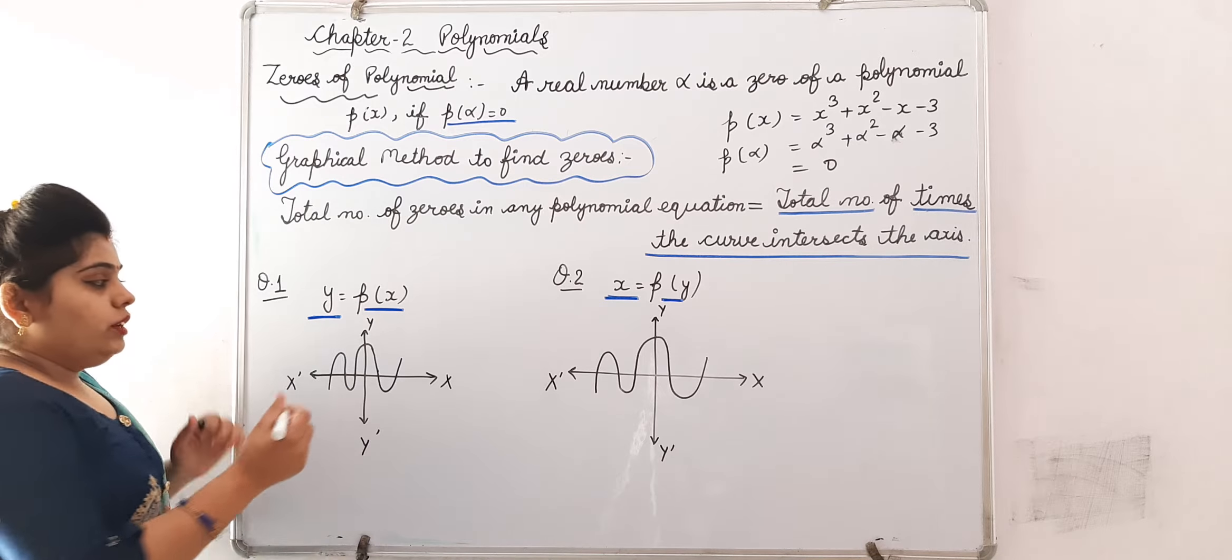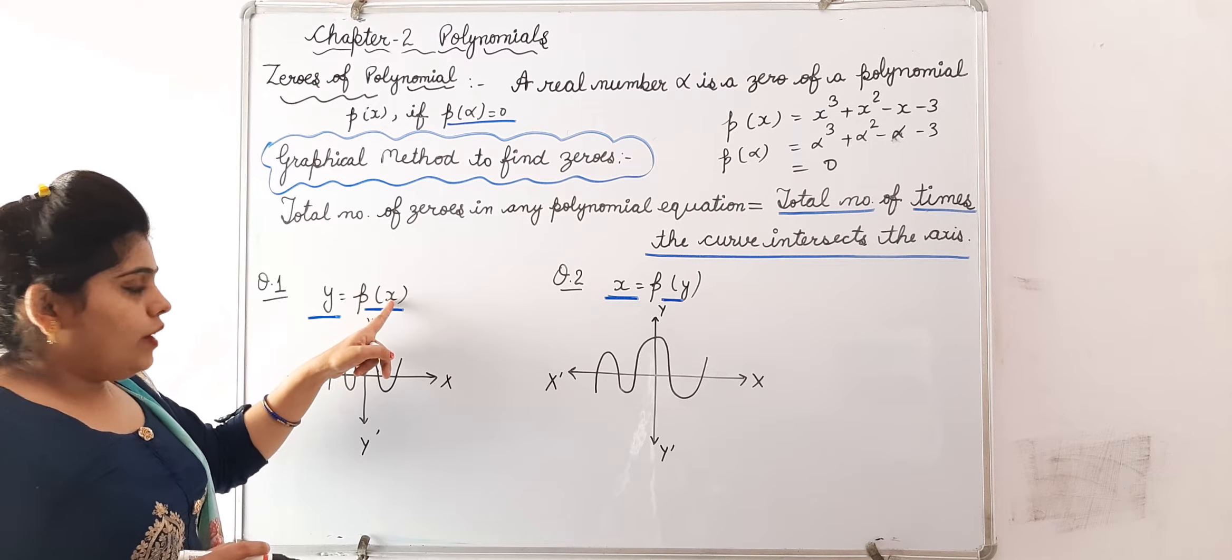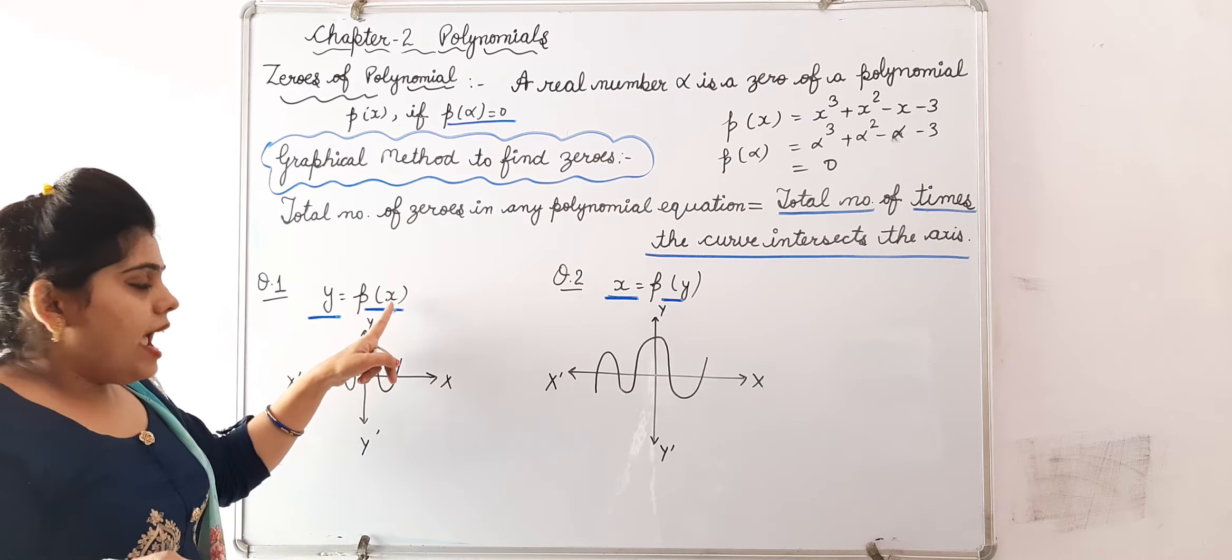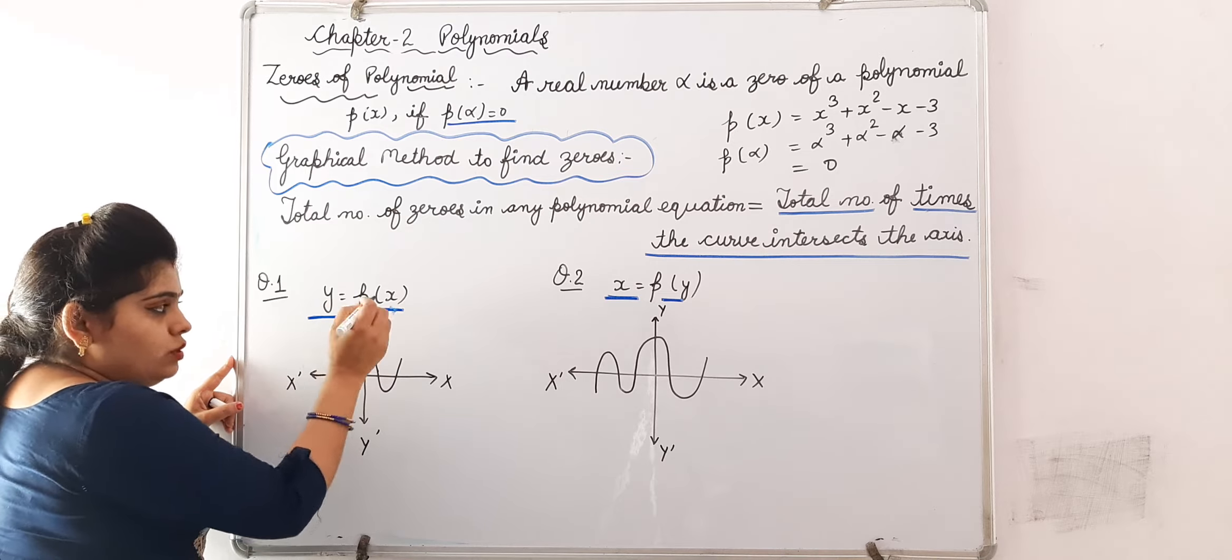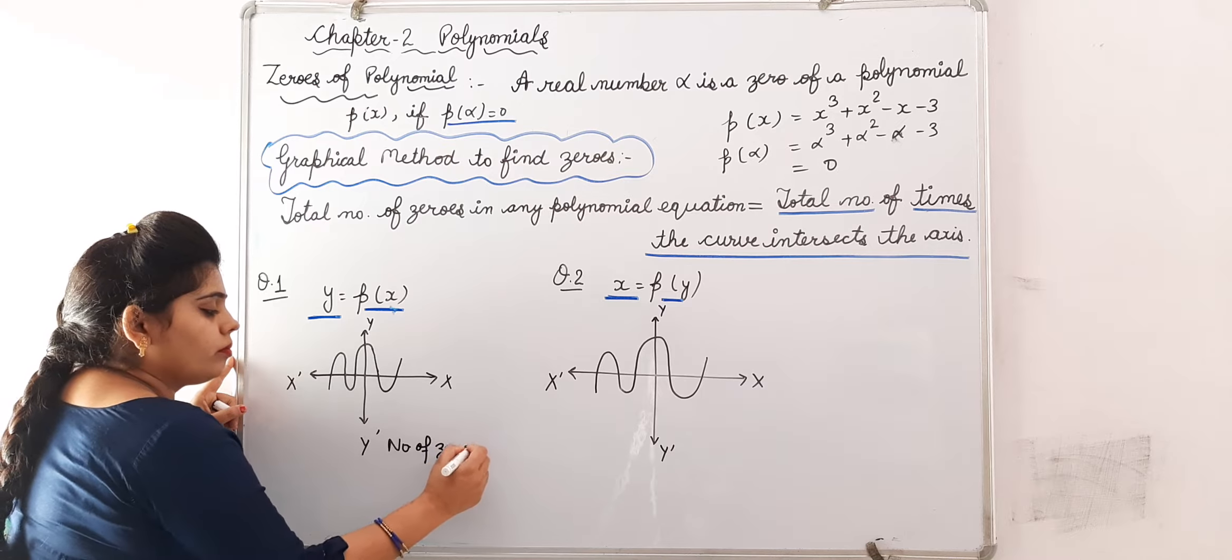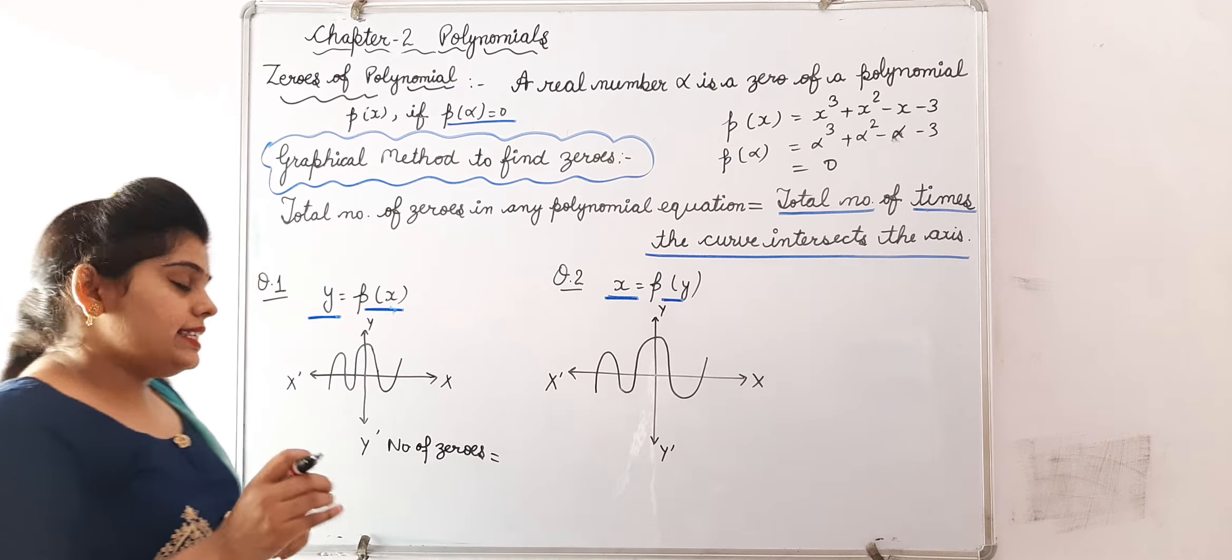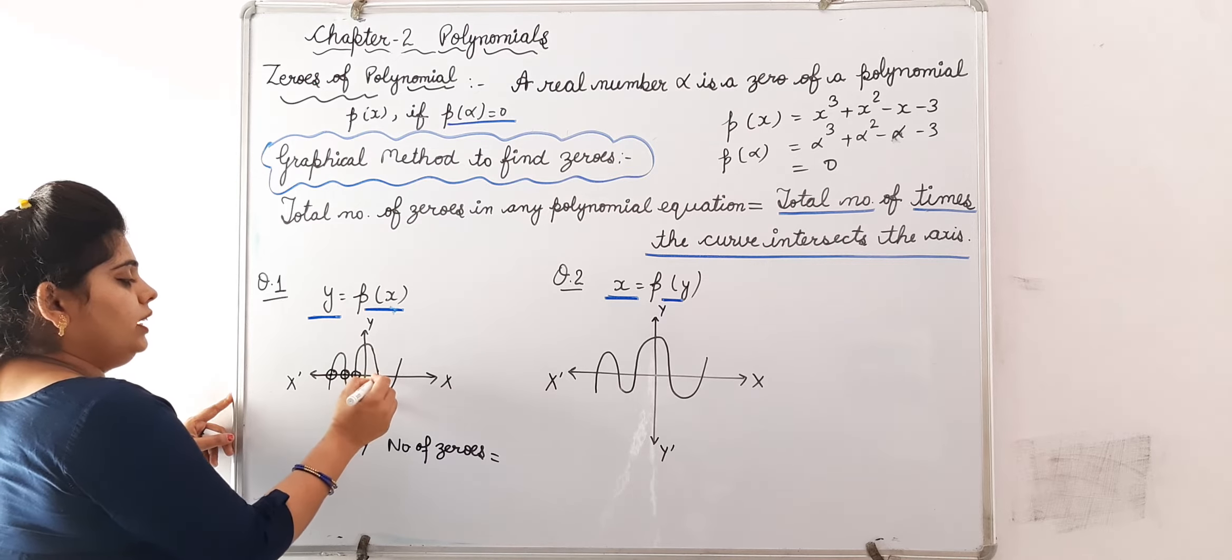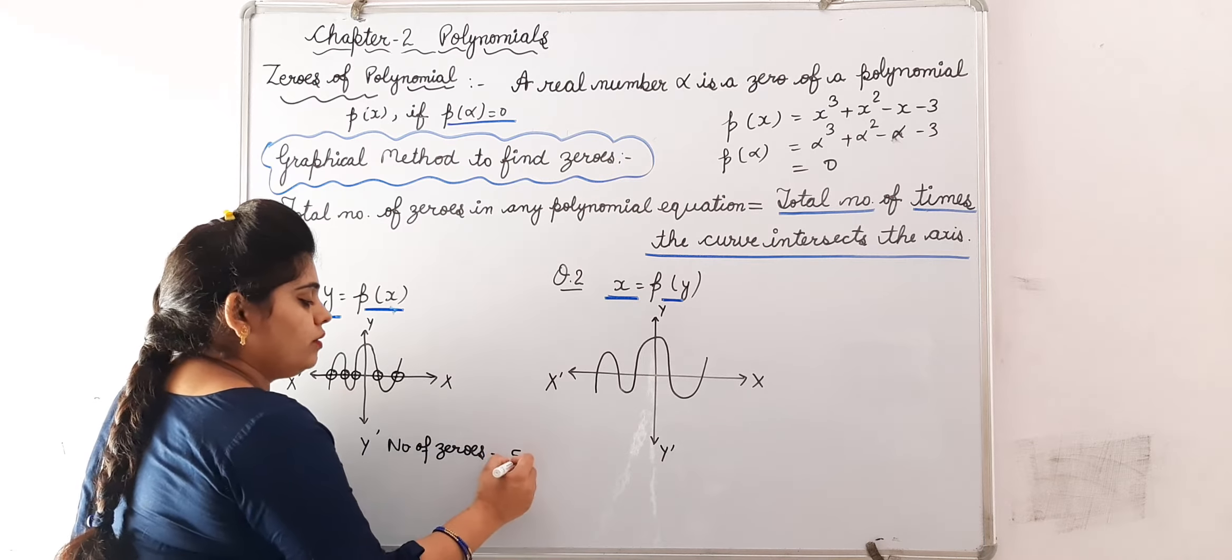Suppose equation is y is equal to P of x. This is equation of y in the form of P of x. We will study this correlating with x variable on x axis. You are given this graph. Now according to this question, number of zeros equal to - we will check how many times this curve intersects x axis. How many times? 1, 2, 3, 4, 5. So number of zeros will be 5.